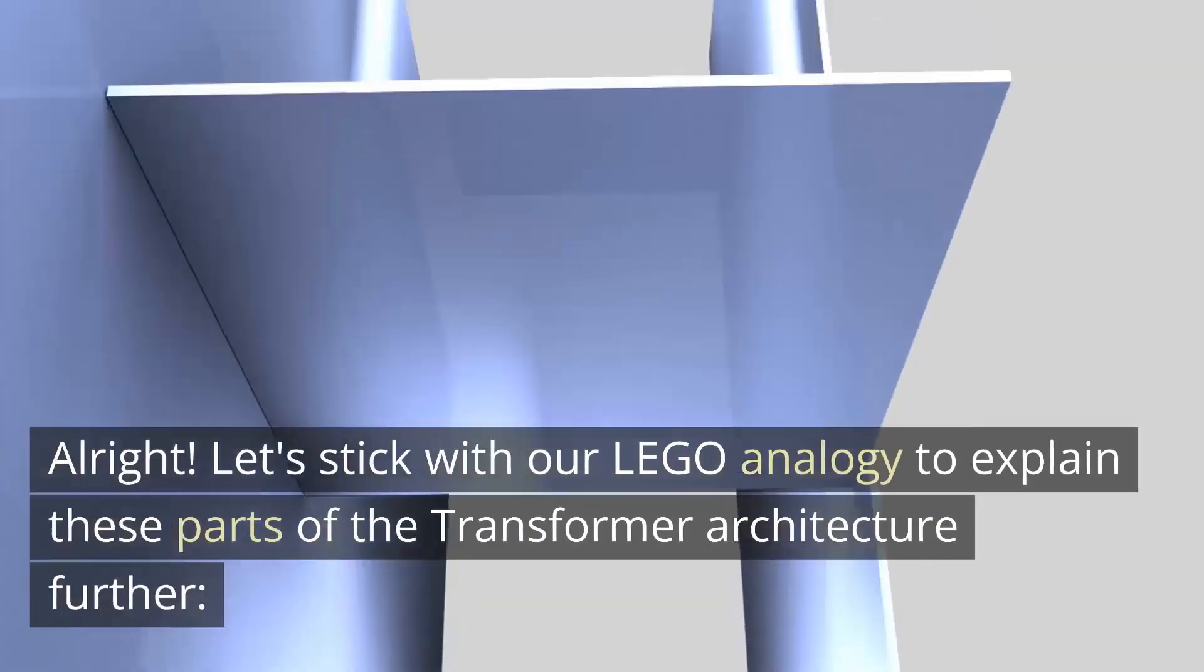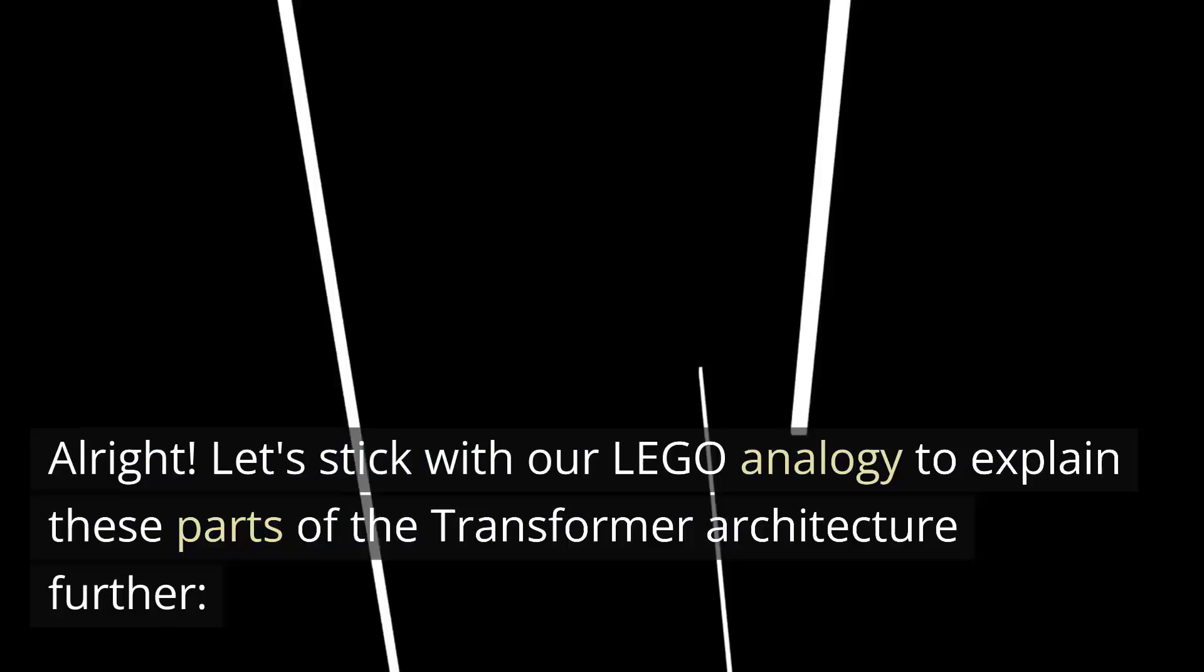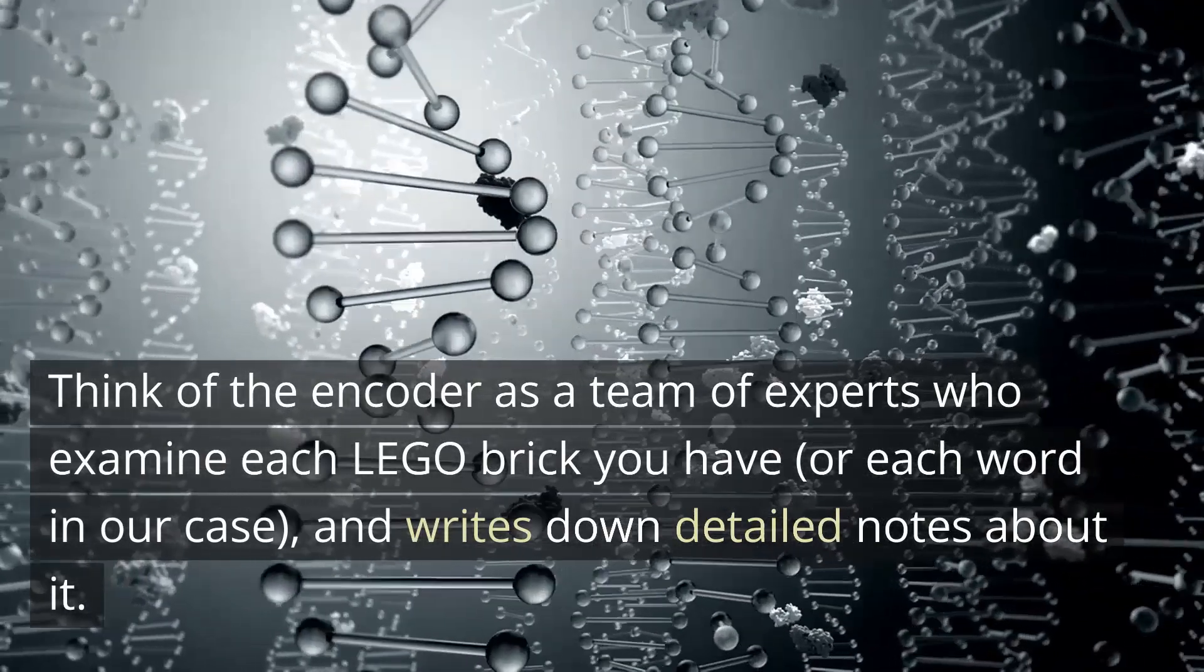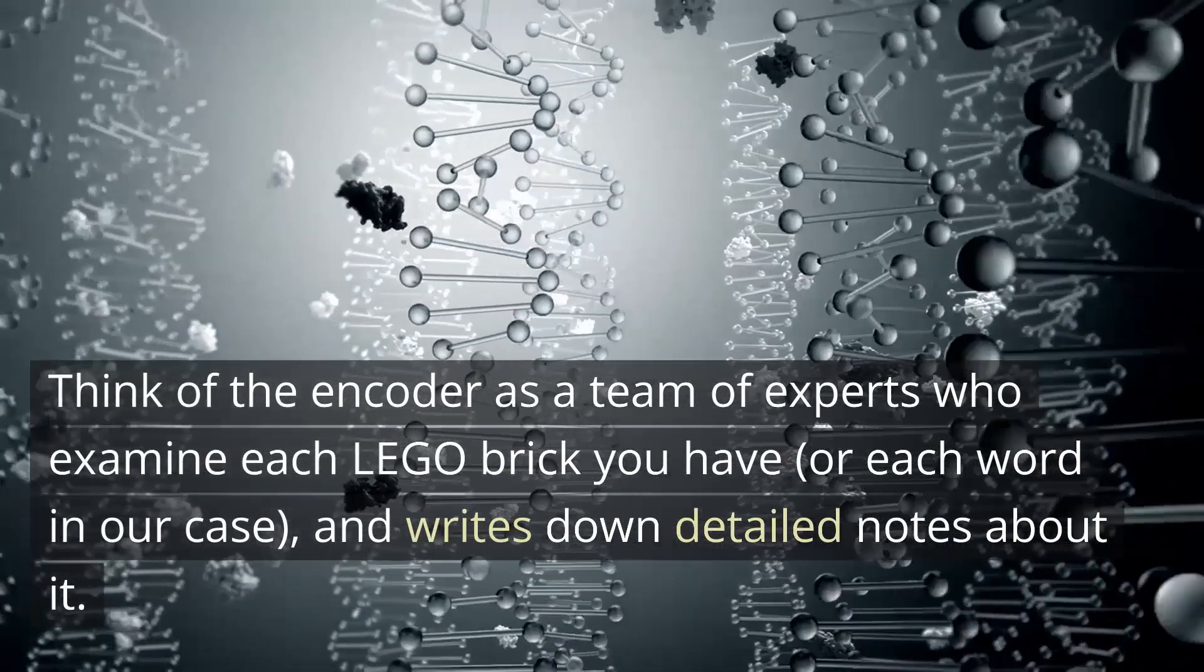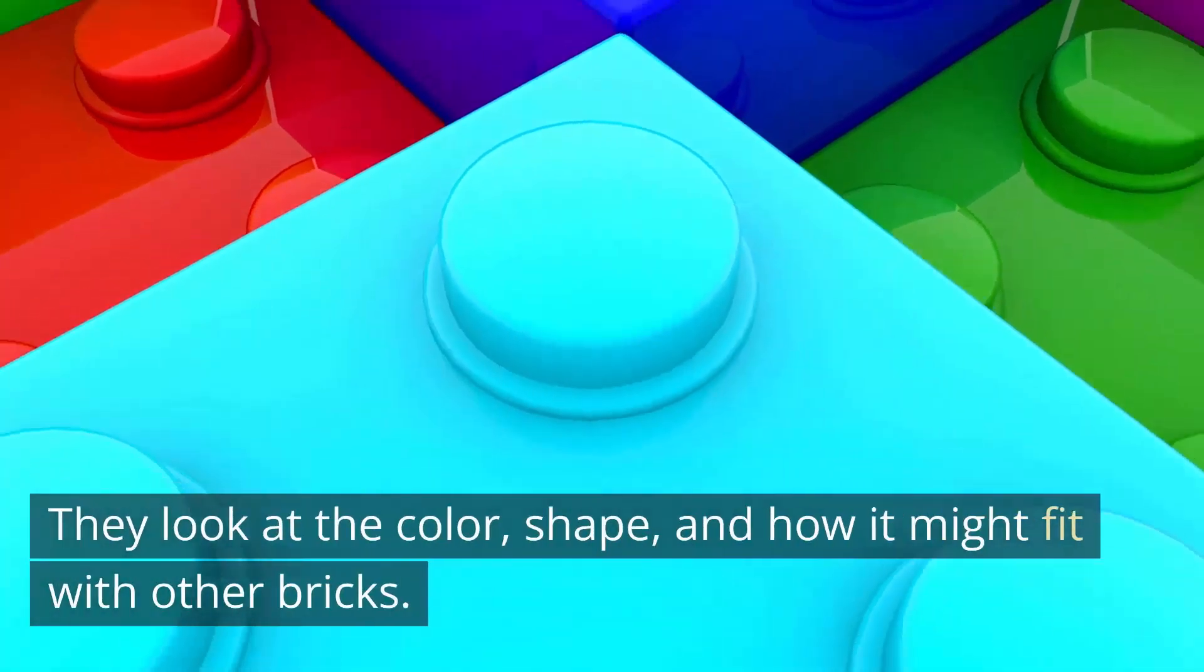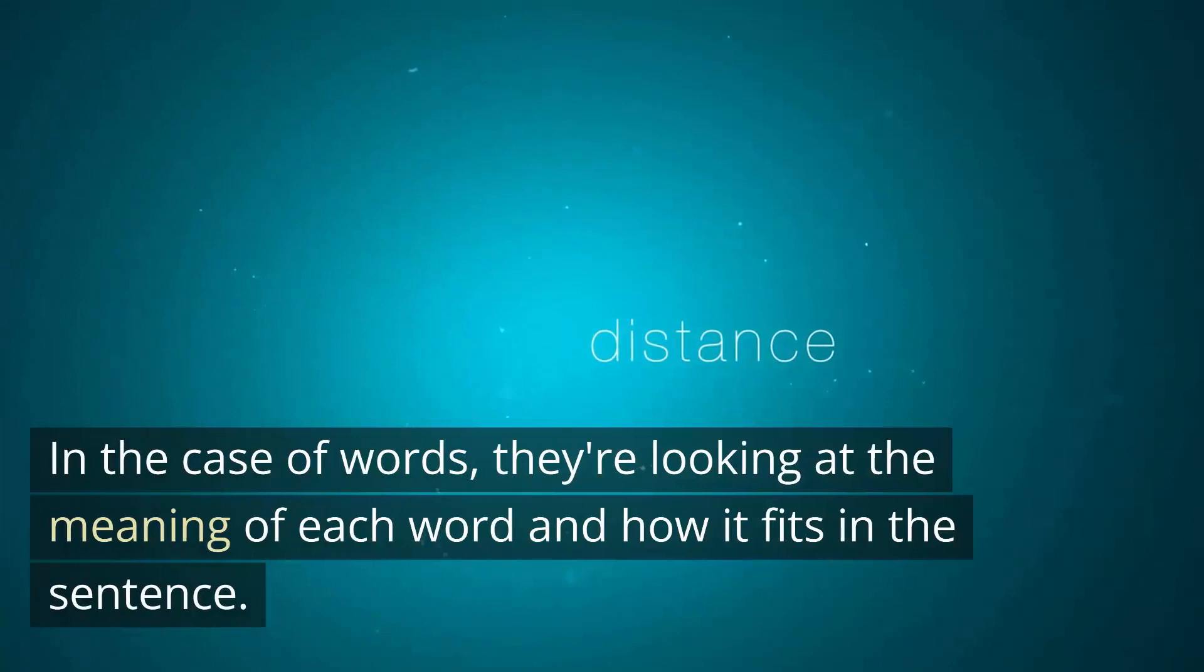So there is a single encoder and a single decoder, each made up of n-stacked layers. The layers contain the self-attention and feed-forward sub-layers that actually perform the transformations. The outputs of each sub-layer are normalized and fed into the next encoder-decoder layer in the stack. So the encoder and decoder layers work together sequentially rather than having separate encoders and decoders for each layer. In summary, there is one encoder passing information through n-encoder layers and one decoder passing information through n-decoder layers in a transformer architecture. All right, let's stick with our LEGO analogy to explain these parts of the transformer architecture further. First, the encoder. Think of the encoder as a team of experts who examine each LEGO brick you have, or each word in our case, and writes down detailed notes about it.